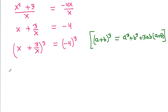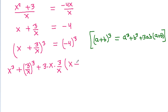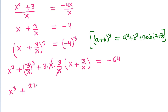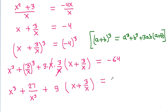So this would be x³ - 3/x³ - 3 × x × (3/x) × (x - 3/x) = (-4)³ = -64. The x cancels, giving x³ - 27/x³ - 9(x - 3/x) = -64.